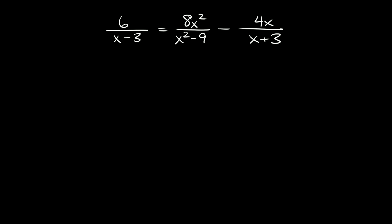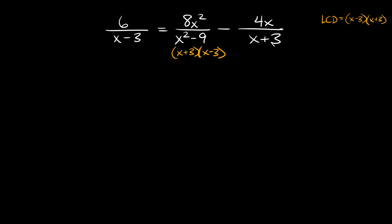Here's the last one: 6 over x minus 3 equals 8x squared over x squared minus 9, minus 4x over x plus 3. First, find the LCD. Notice that x squared minus 9 is a difference of squares, which factors as x plus 3 times x minus 3. Now finding the LCD: we have x minus 3, x minus 3 again (only write once), and x plus 3 (only write once). So the LCD is x minus 3 times x plus 3.